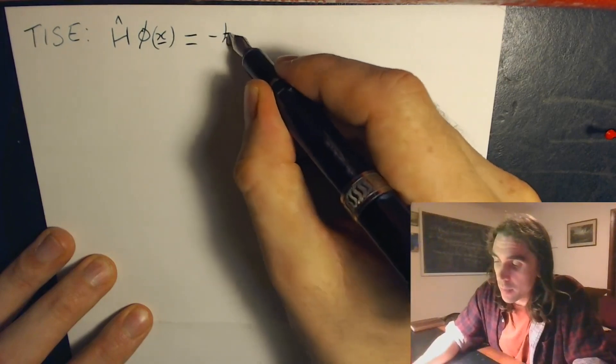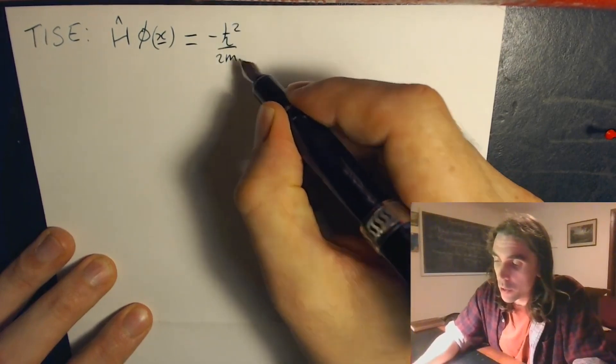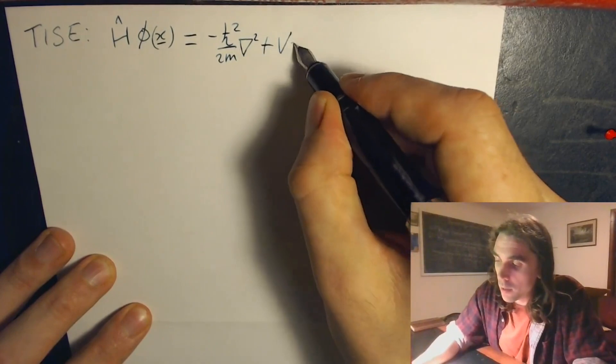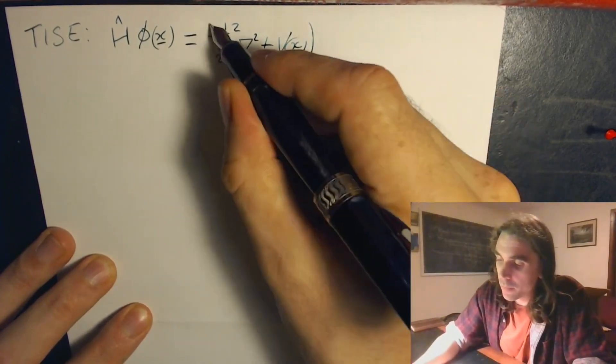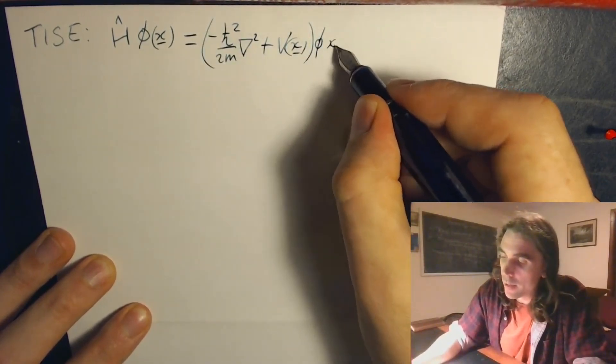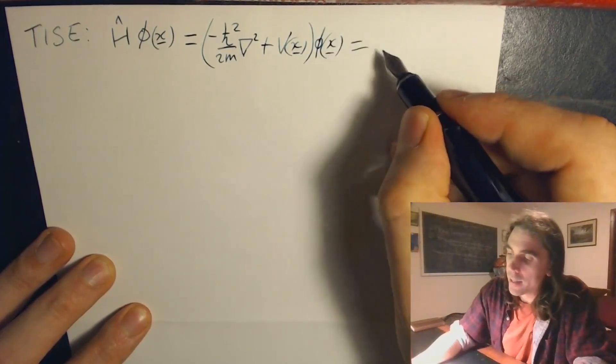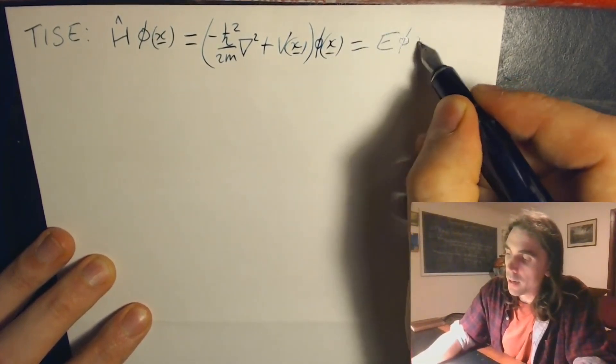This is defined to be minus h bar squared over 2m grad squared plus v of x, all acting on phi of x, and this equals e phi of x.